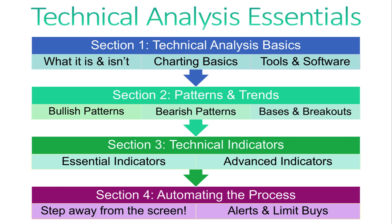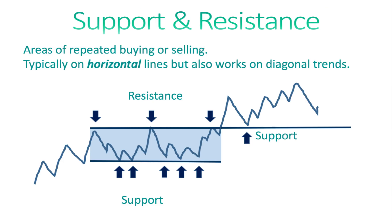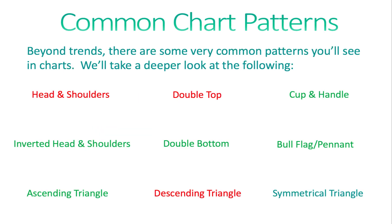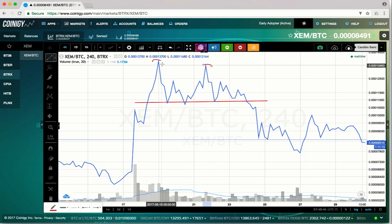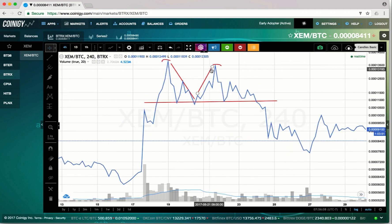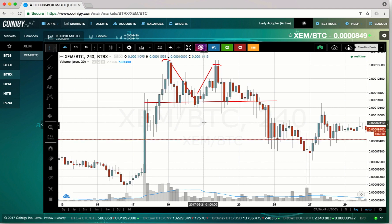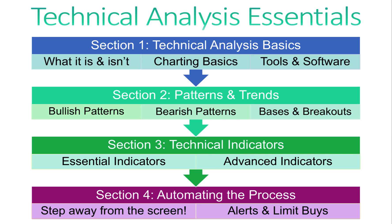In section two, we'll talk patterns and trends. We'll look at bases, breakouts, how to spot them, what they are, and some of the most common patterns you'll find in cryptocurrency trading. We'll start off with a review of the chart and pattern we're looking for, explain how it works, what it is, how you spot them, whether it's a continuation pattern or a base setup, and then we'll look at some live charts and examples of where we've seen these patterns in the past and how they played out.